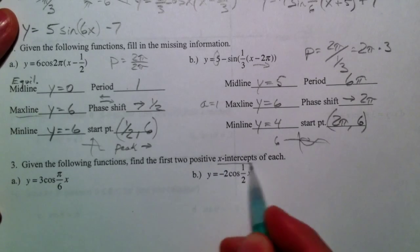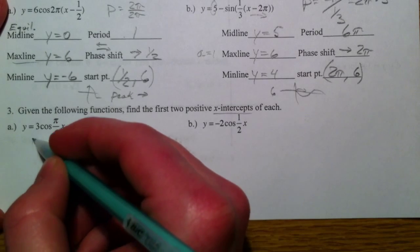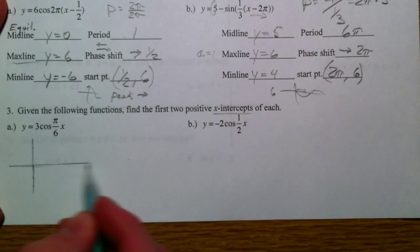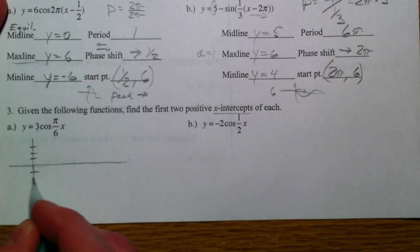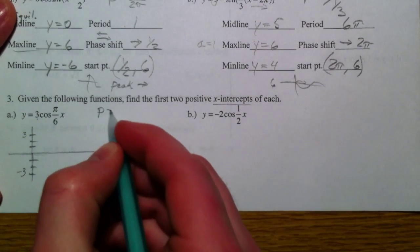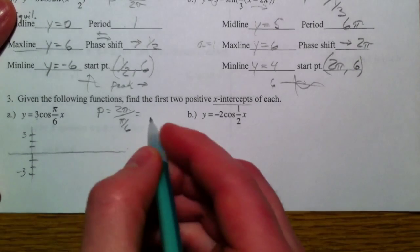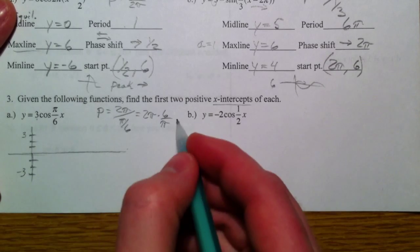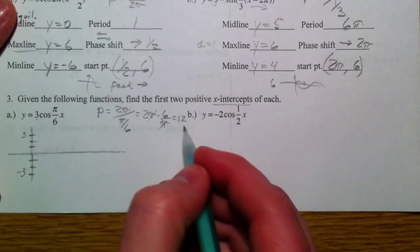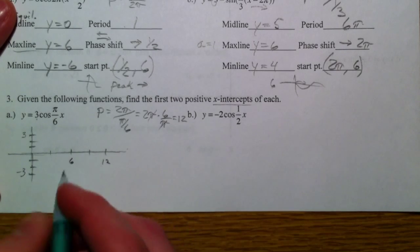So, 2 functions find the first positive x-intercepts of each. I'm going to draw a graph in order to do these. Because it's a lot easier. So, 3 cosine of pi over 6, x. 3 is the amplitude, so I'm going to go up and down 3 from 0. The period, usually 2 pi, is being divided by the pi over 6, which is multiplied. So, it's affecting the x.